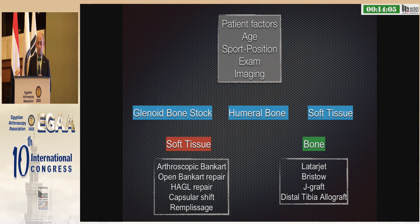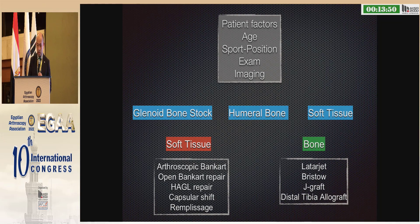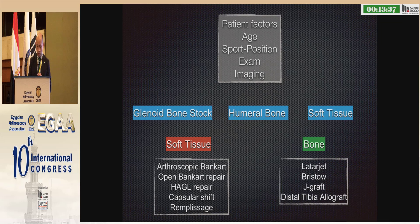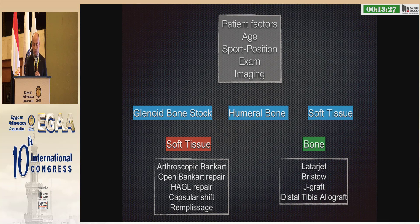When we have this type of patients, we have to evaluate patient factors such as age and the sport position where they play. We have to perform a good exam and take good quality imaging to assess the glenoid bone stock, how the humeral bone is, and the condition of our soft tissue. For soft tissue procedures, we have arthroscopic Bankart, open Bankart repair, Hagart repair, capsular shift, and remplissage. For bone procedures, we have the LATARJET, the Bristol, the J-Graft, and the distal tibia allograft.